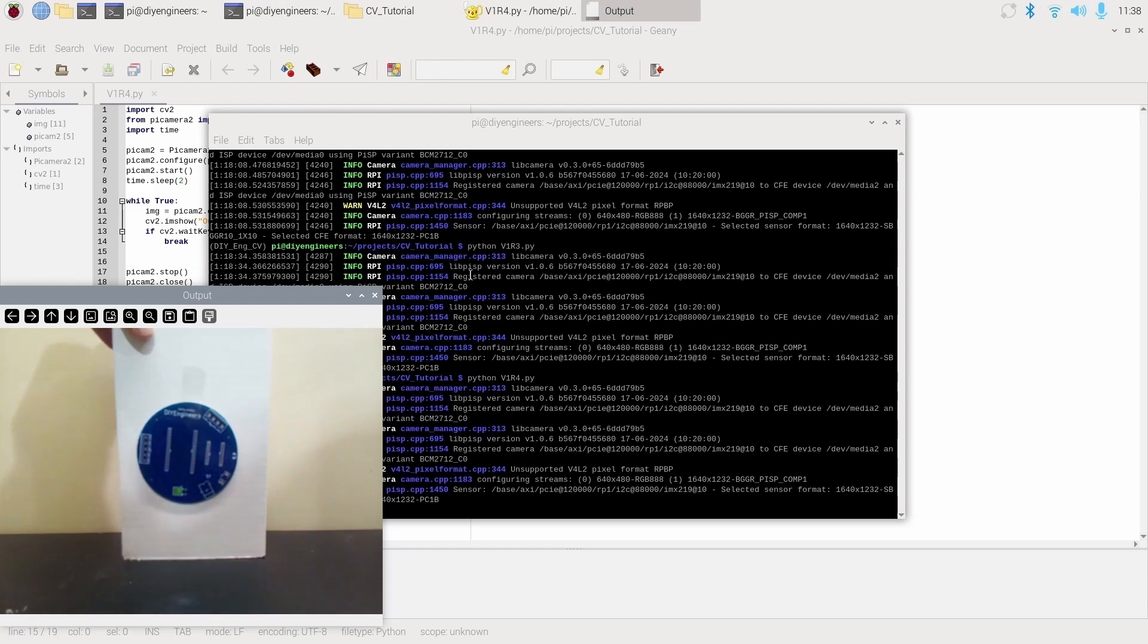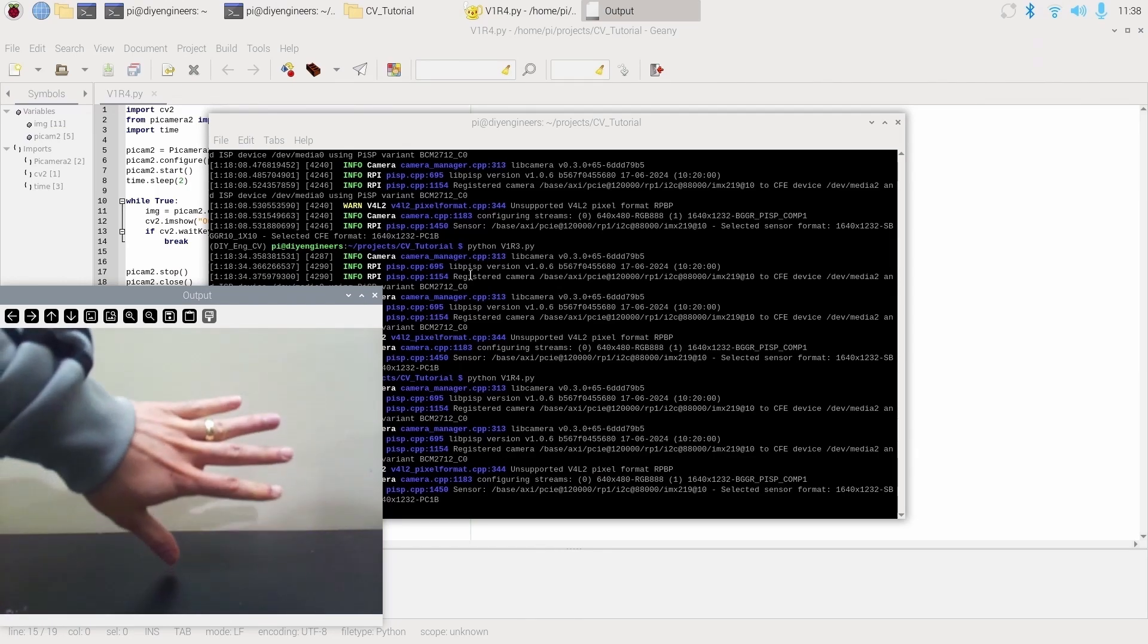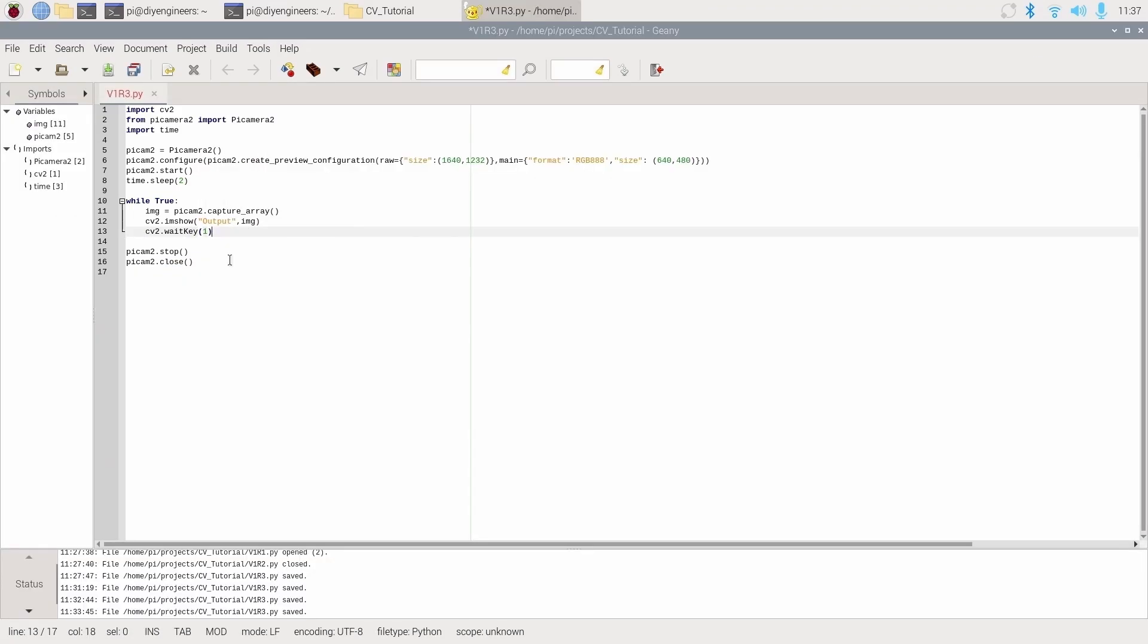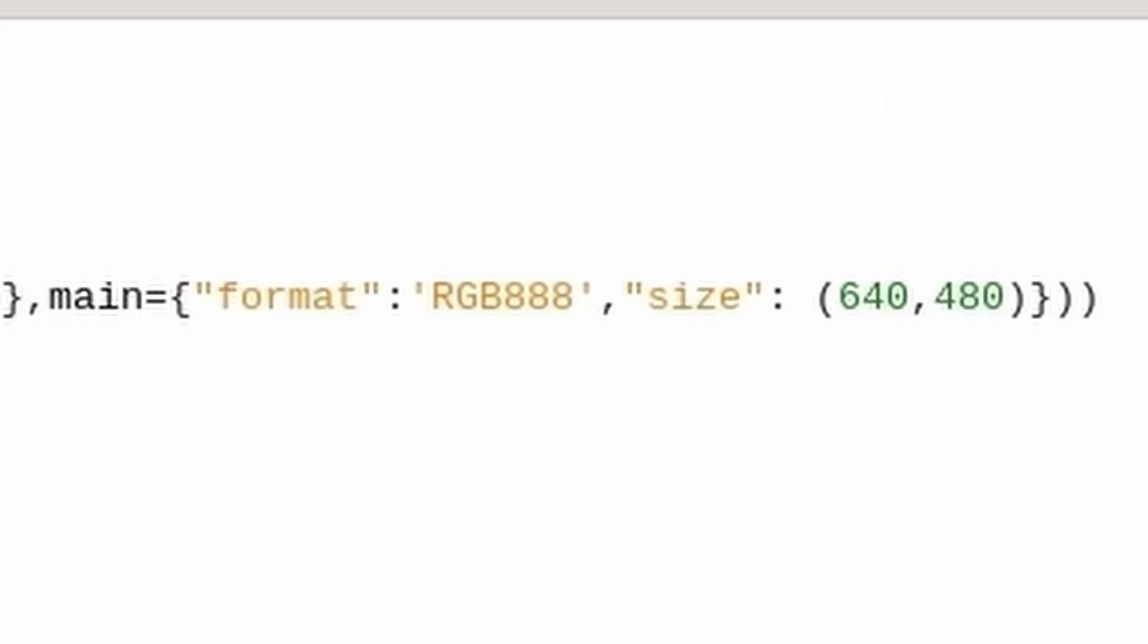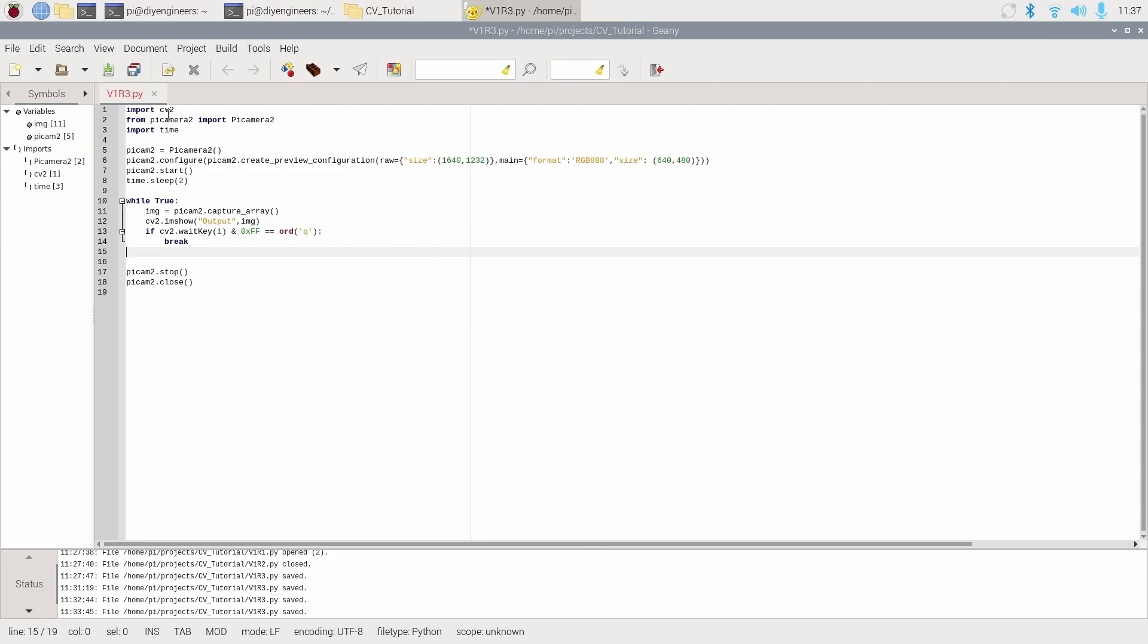Now if we look at the example from the previous video where I showed how to get live feed from a Raspberry Pi camera, you could see there was this line where we have the PiCam2 configure and there's a section where we specify the format. So here's where you want to pick the RGB option if you're going to get the output BGR which is what we need for OpenCV.